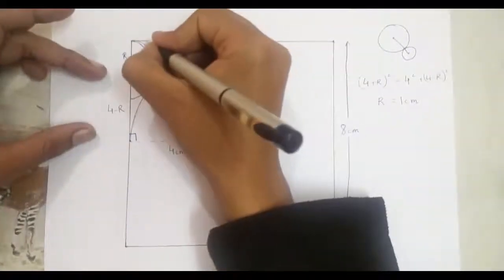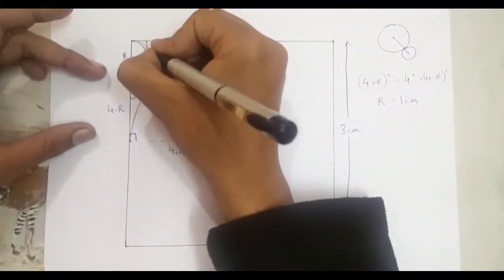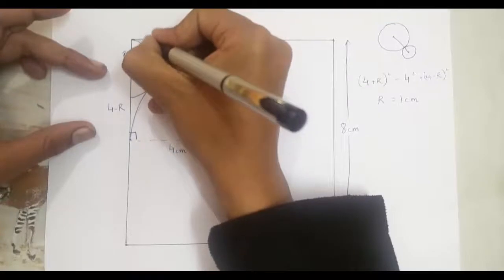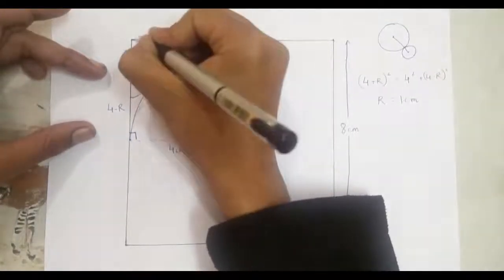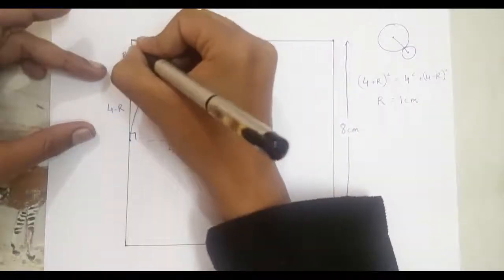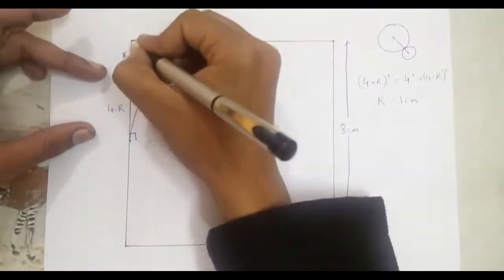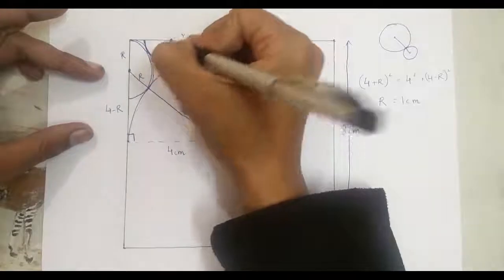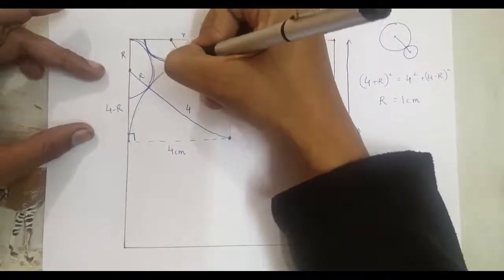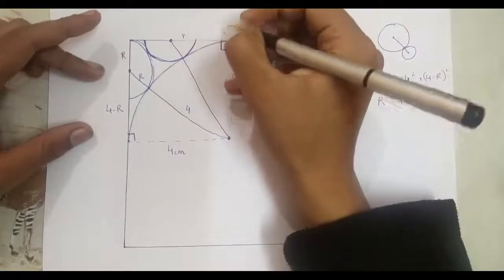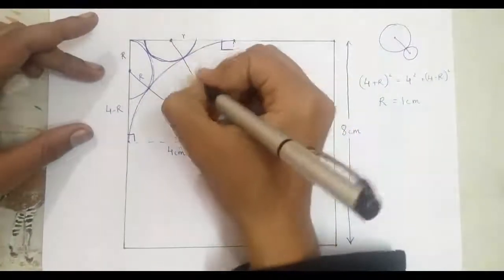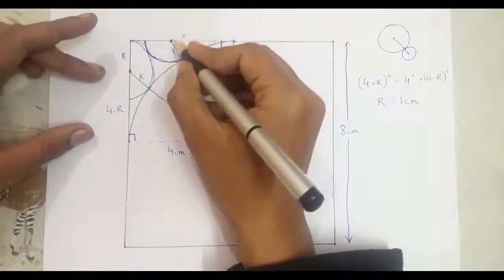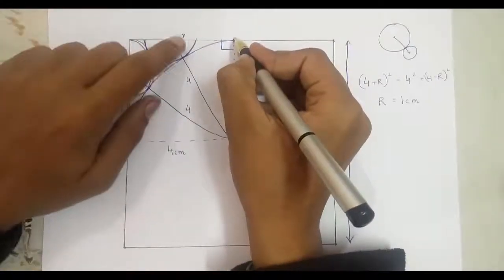Now let's draw the second semicircle. The second semicircle is going to touch the other two circles — the first semicircle and the second circle — but it's obviously not going to touch the vertex, because if it did touch the vertex, it would not touch the first semicircle but intersect. Let's call the radius of this semicircle as r. Now in this triangle, people are led to believe that this side is of course 4 plus small r, then there's this 4, and this side people think is 4 minus r — which it isn't.